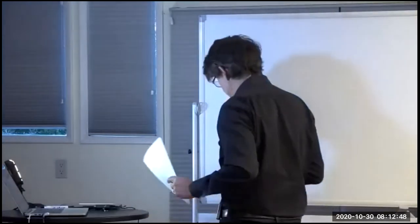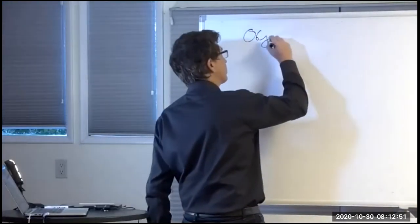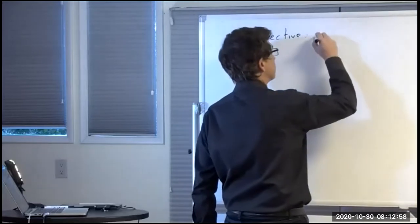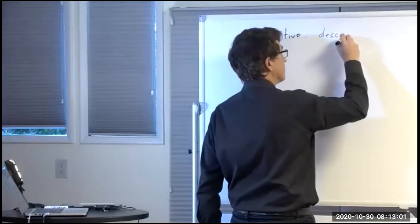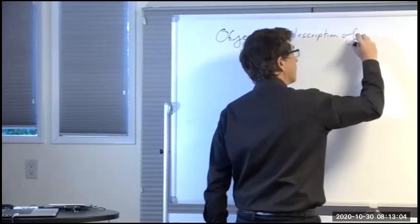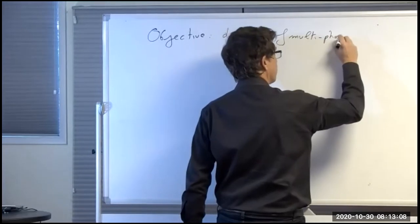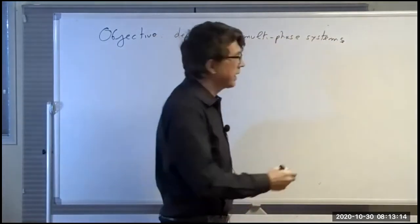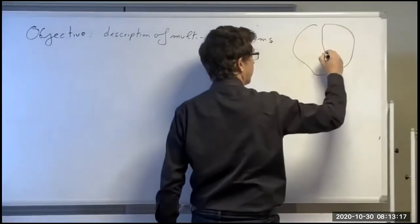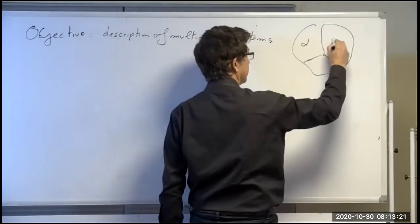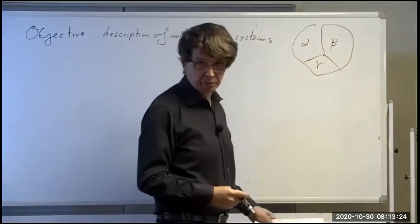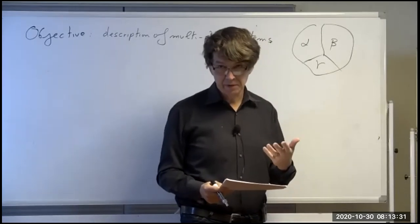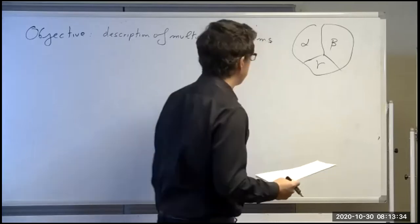Our objective for pretty much the rest of the course is the rigorous description of multi-phase systems. We will be looking at a system that has multiple phases. I'll typically use Greek letters to denote phases — alpha, beta, gamma — and normal Arabic indices like i, j, k for species.